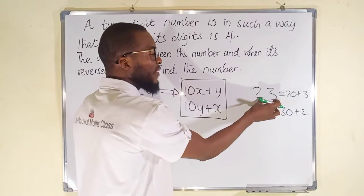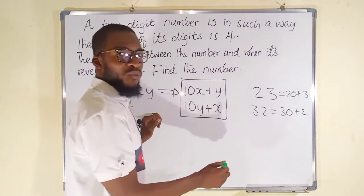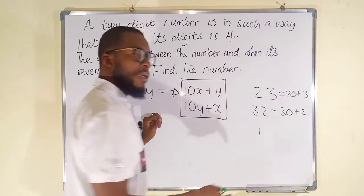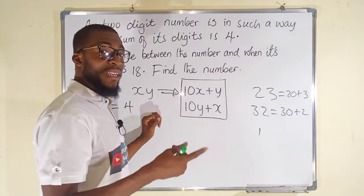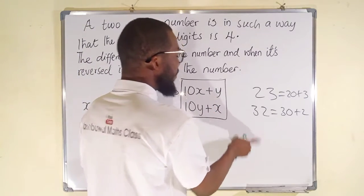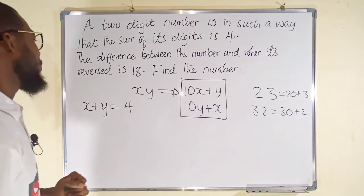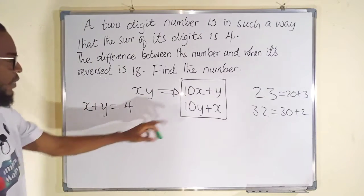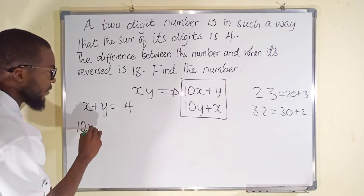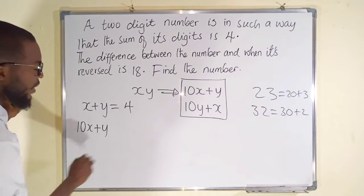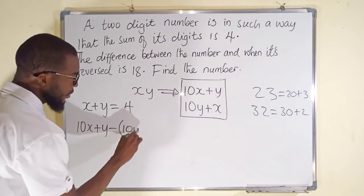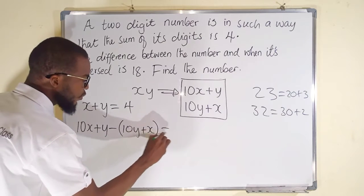If you know 3 is greater than 2, so the difference between these two numbers is 3 minus 2, which is 1. At the same time, 2 minus 3 is negative 1, but the absolute value of negative 1 is still positive 1. So we can consider any one of these and we are going to get the same value. Let's say 10X plus Y, then we take away 10Y plus X, the result will be 18 according to the question.